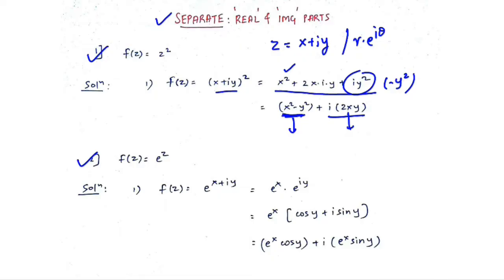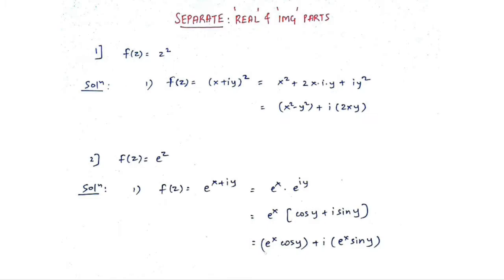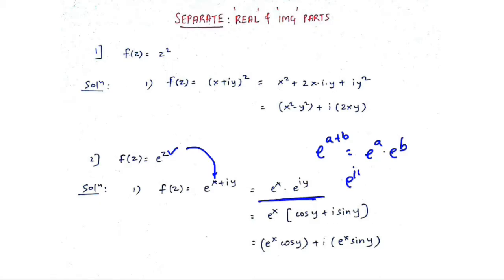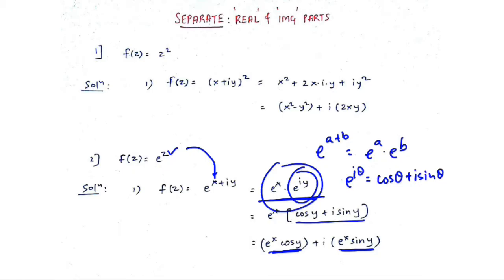Question 2: f(z) = e^z. Replace z by x plus iy, then use the indices rule: e raised to (a+b) equals e^a times e^b. Separate the terms, then apply Euler's formula: e raised to i theta equals cos theta plus i sine theta. So e raised to iy becomes cos y plus i sine y. Separate the real and imaginary parts and you are done. Without knowing Euler's formula or indices rules, you cannot proceed — it's all about strategy.